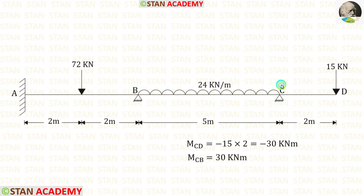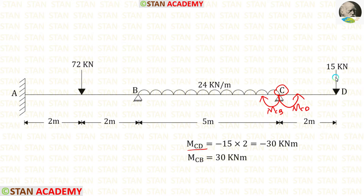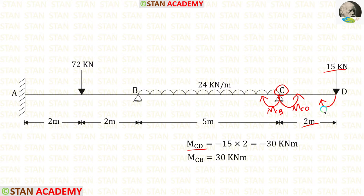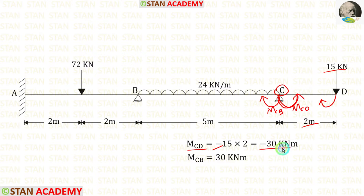At point C, we have two moments: MCB and MCD. To find MCD, we multiply this load by the overhanging distance of 2. This load is acting in the clockwise direction, so MCD will be acting in the anti-clockwise direction. Therefore, we apply a negative sign: minus 15 into 2 gives us minus 30 kilonewton meter.